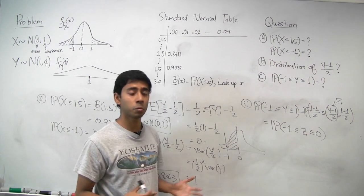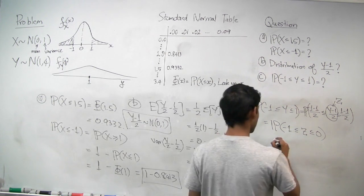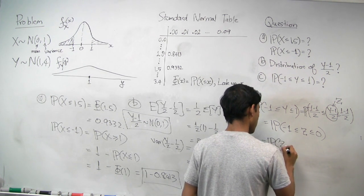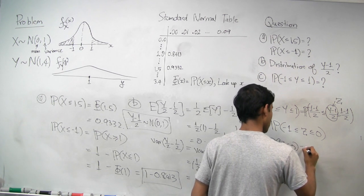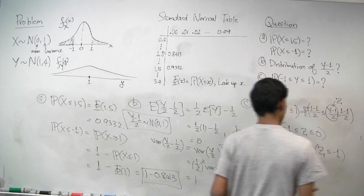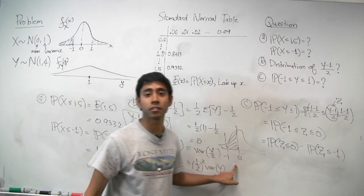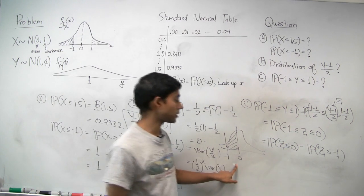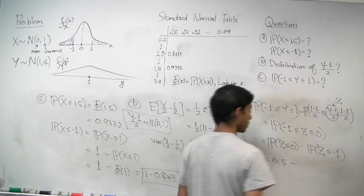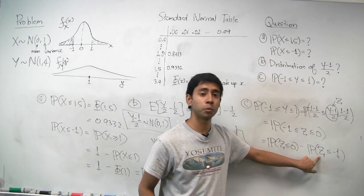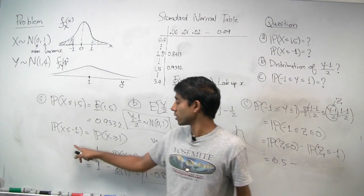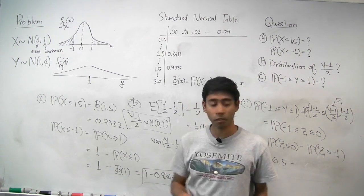So that's just the probability that it's less than 0, minus the probability that it's less than negative 1. Well, for a standard normal, half the mass is below 0 and half the mass is above. And so that's just going to be 0.5 directly. And for this, we've already computed this for a standard normal, which was X in our case. And that was 1 minus 0.8413.